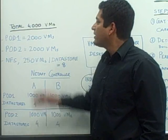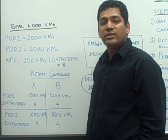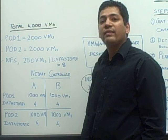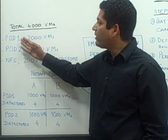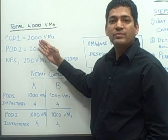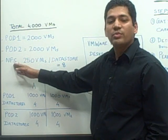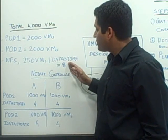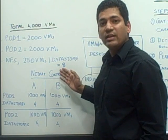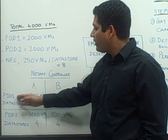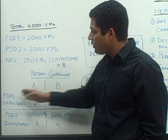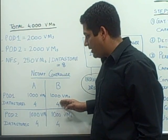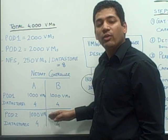Consider an example of a customer planning to implement 4,000 VMs. Based on the type of servers and the ESX maximum configurations guide from VMware, we determine that the customer can host all 4,000 VMs across two pods: pod 1 with 2,000 VMs and pod 2 with 2,000 VMs. If the customer chose NFS with 250 VMs per datastore, the total number of datastores required per pod is 8. Splitting across controllers gives 1,000 VMs on each controller per pod, with 4 datastores on controller A and 4 on controller B. The same is done for pod 2.